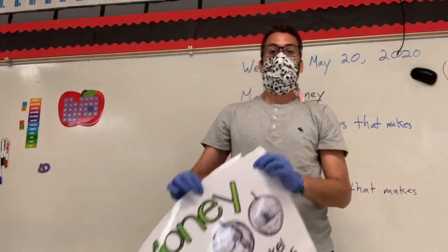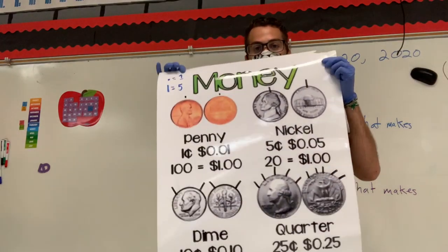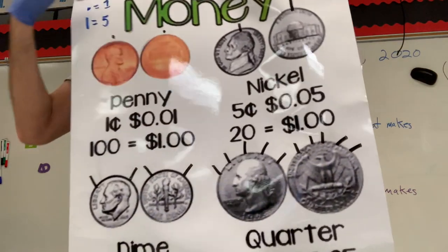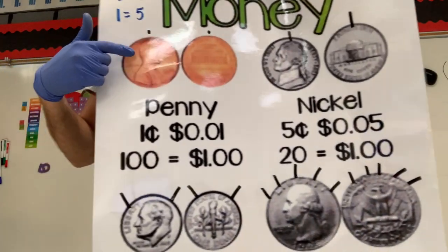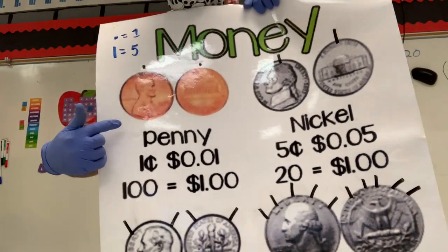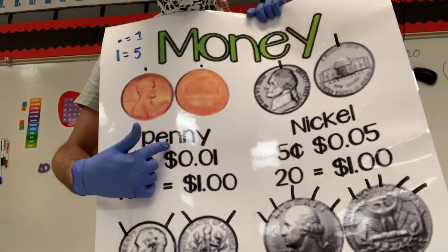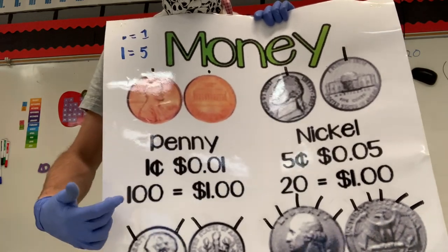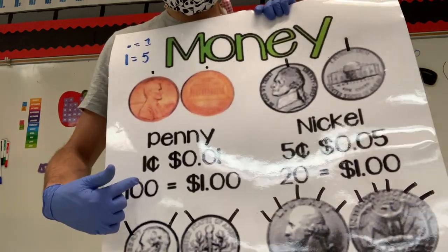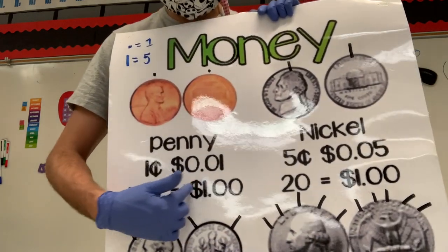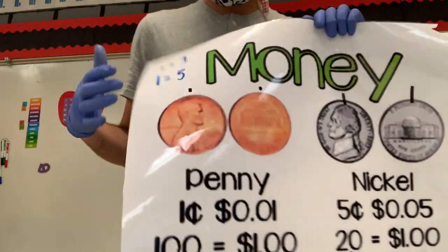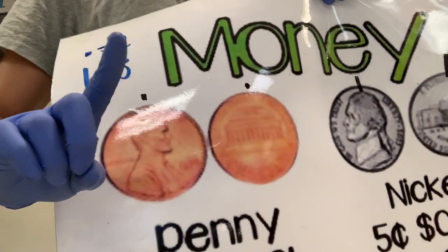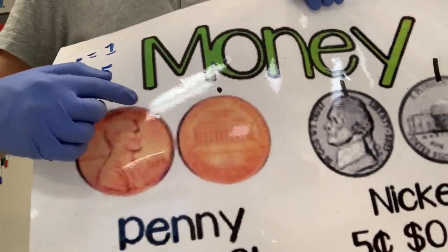If you can remember this from class — great. Now what coin is this? This is a penny, and a penny is one cent. So one hundred pennies equals one dollar. When we do hairy money, the penny does not have a hair — it has a dot.